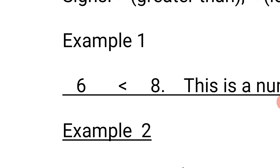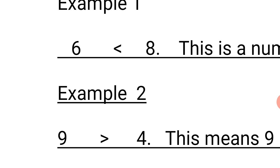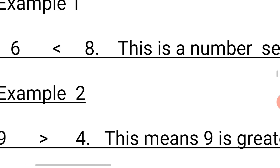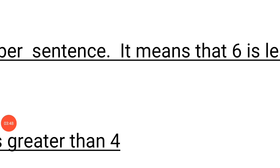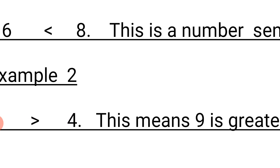Let's go to the examples. The first example says 6 and 8. How do we know the answer to write? The answer is less than, because 6 is written before 7 and 8. So we say 6 is less than 8. We use the sign to indicate that 6 is less than 8. Don't forget that the left arm is used to demonstrate how the less than sign is written.